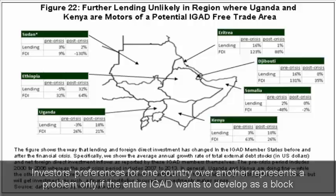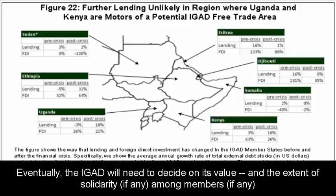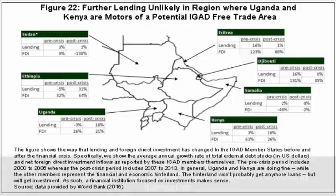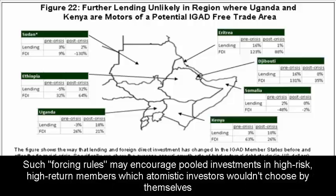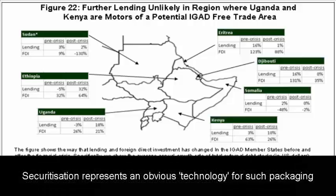If the IGAD region wants to promote investment as a block, as a unit, then methods must be devised to pool or aggregate investments and sell them as tranches or packets to investors, such that even the less attractive economies would still receive part of the investments going into the overall IGAD region.